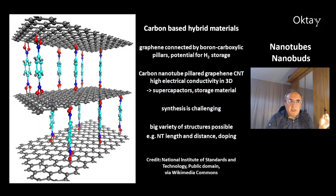This is a picture of carbon-based hybrid materials made of graphene connected with boron-carboxylic pillars. They have high potential for hydrogen storage. You would like to make a carbon nanotube pillar with graphene. This would give this material high electrical conductivity in three dimensions, not only in two dimensions like with graphene.